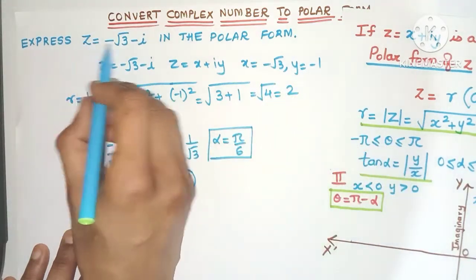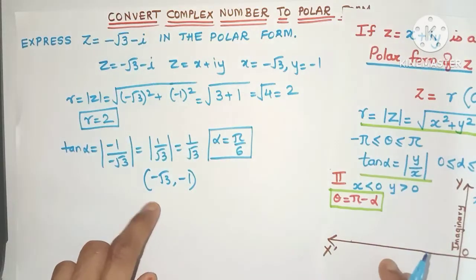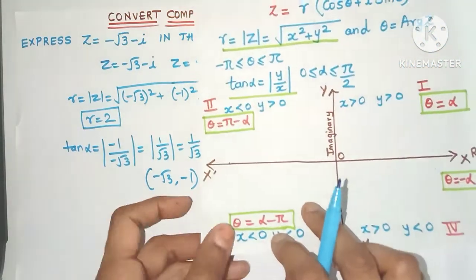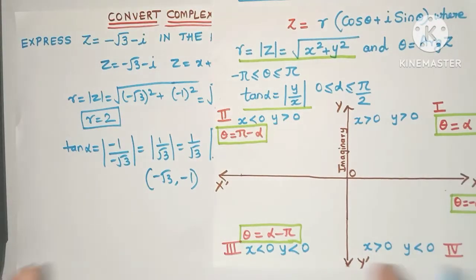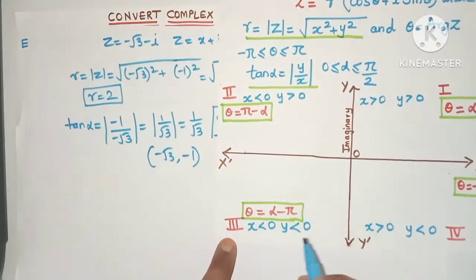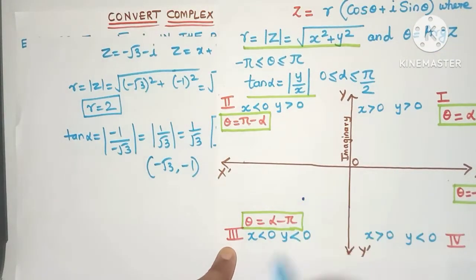So actually this complex number can be represented by this point (-√3, -1) on the xy plane. Now can you guess in which quadrant this point lies? Yes definitely it lies in the third quadrant, maybe a point over here.